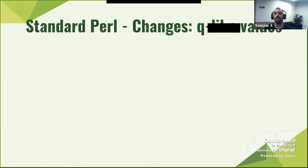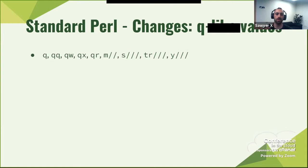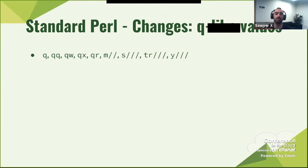These are the q-like values — the things we changed. Q-like values are things like q, qq, qw, qx, qr, the 'm' for matching, the 's' for search-replace, the tr, and the y. They are all considered q-like values. They are not functions. They are values.